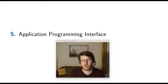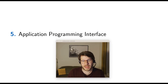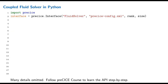Now you know what preCICE can do. We don't know yet how to use it, so let's look at the application programming interface. We'll look at a coupled fluid solver written in Python, using the Python bindings of preCICE. Of course I'll need to omit many details — if you want to learn those, please follow the preCICE course. What we're doing here is not exactly an adapter, but more like an adapted code where we directly call the preCICE API within the solver code.